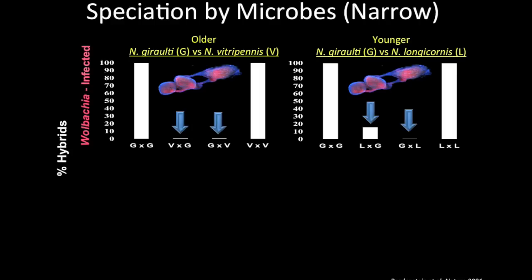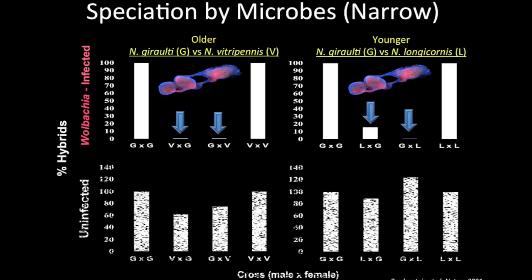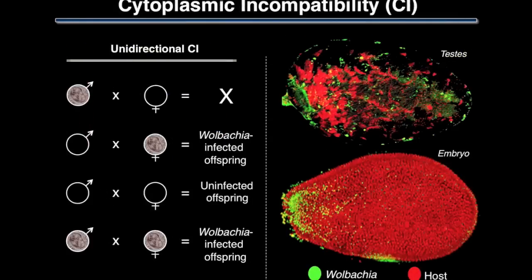We take these species hybridizations — in the older species pair, vitripennis and giraulti, which diverged a million years ago, and the younger species pair, which diverged 400,000 years ago. Wolbachia infect the germline — the testes, the accessory glands, and the ovaries. If we do crosses between species with Wolbachia infections, hybrid production goes way down in both crosses. And then if we antibiotic-eliminate the Wolbachia and do the same crosses, we see a dramatic increase in hybrid production in the absence of Wolbachia. This shows that Wolbachia alone, in a narrow sense, can drive extreme and significant hybrid mortality, where the microbe is the primary cause of reproductive isolation.